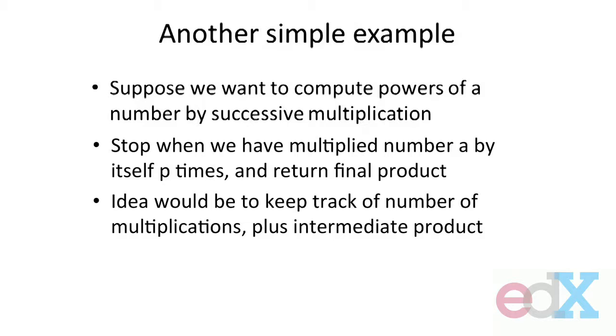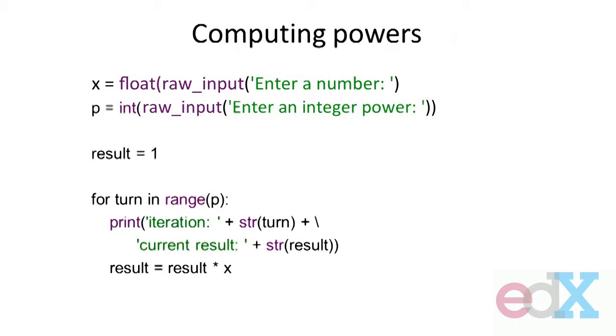Here's some code to do it. It's pretty straightforward. I'm going to input some number for x, some number for p, and make sure it's an int by doing type casting. I'm going to set up an intermediate variable to store the result, and then I'll run through that loop where I'll print something to tell me where I am and change the value of result.